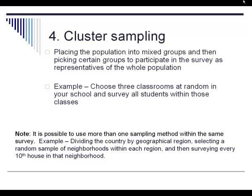It is possible to have more than one sampling method in a survey. For example, if we divide the country first by geographic region, take a random sample of certain neighborhoods within each region, and then survey every tenth house in that neighborhood — we have stratified sampling, cluster sampling, and systematic sampling all used together in that type of situation.